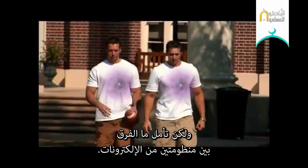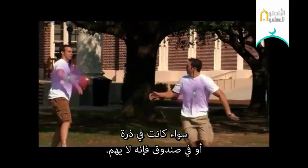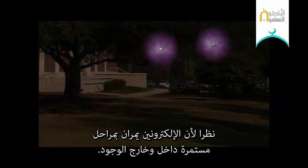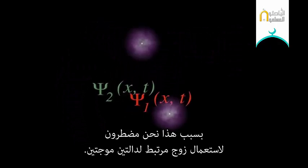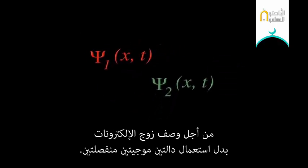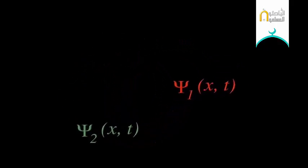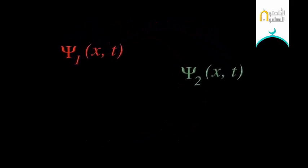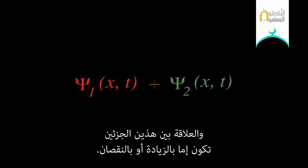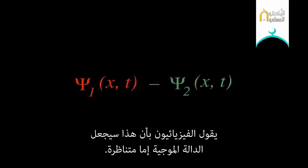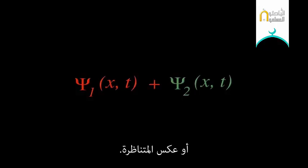But consider what is different about a two-electron system — whether in an atom or in a box, it doesn't matter. Since the two electrons are consistently phasing in and out of existence, and since they are absolutely identical, it is impossible to keep track of specific individuals. Because of this, we must use a combined wave function to describe the pair rather than using two individual wave functions. This new two-particle wave function will have two parts to it, and those parts will either add or subtract. Physicists would say this makes the wave function either symmetric or anti-symmetric.